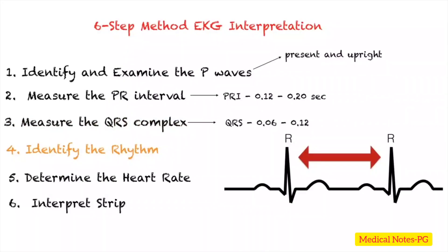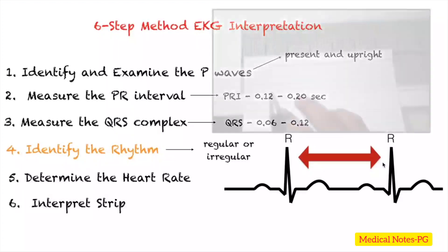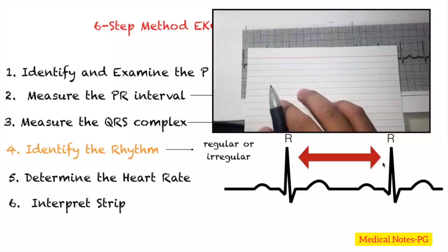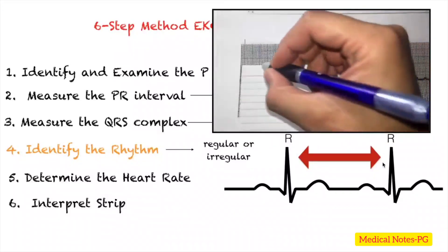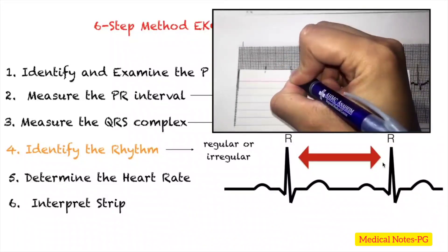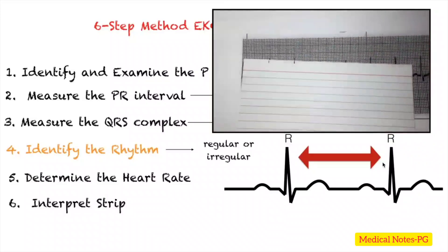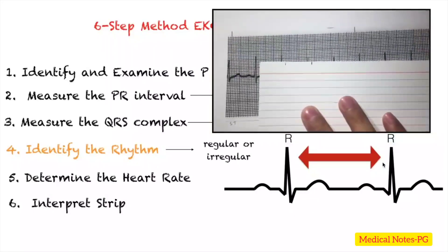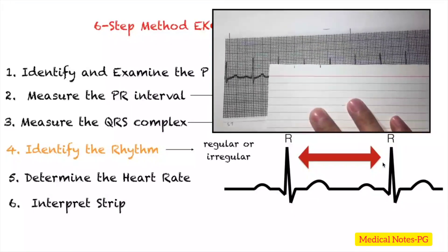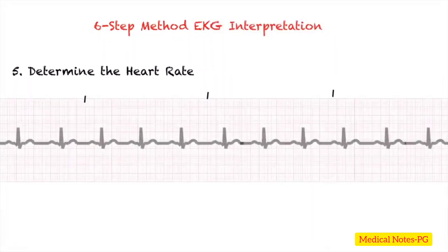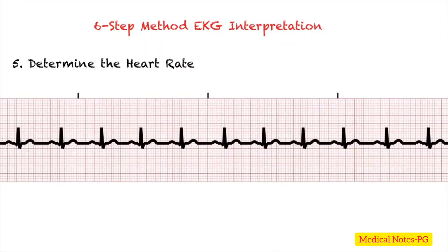Step four is to identify the rhythm — it could be regular or irregular. To do this, measure the distance between R waves. Some people use calipers, but you can use an index card: mark your R waves and march them across the strip. If they have the same distance, the rhythm is regular; otherwise, it is irregular.